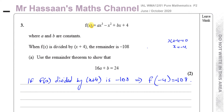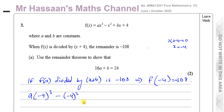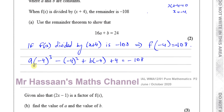We take minus four and substitute it inside the function. So we have a times minus four cubed, minus minus four squared, plus b times minus four, plus four, equals negative 108. So minus four cubed is minus 64a, minus 16, minus 4b, plus four equals minus 108.